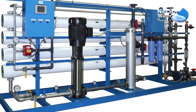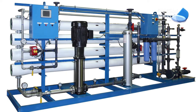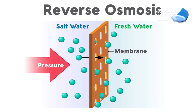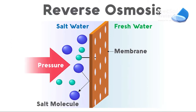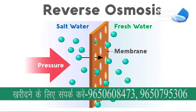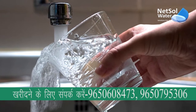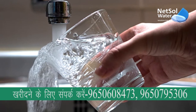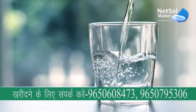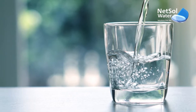Today, we are going to see how an industrial RO plant works. An industrial RO facility is a water treatment plant that uses the technique of reverse osmosis to remove pollutants from water. The reverse osmosis method cleans contaminated water and turns it into pure water that may be used in a variety of industrial applications.